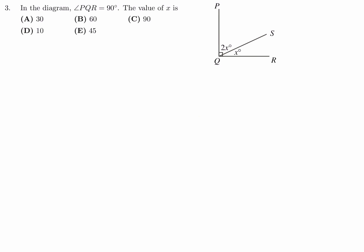In the diagram, PQR is 90 degrees. The value of X is. So that is 90 — from there to there is 90 degrees. They have labeled that as 2X and X. So 2X plus X is equal to 90 degrees. That means 3X is equal to 90, and therefore X is equal to 30 degrees. So number 3, the answer is A.